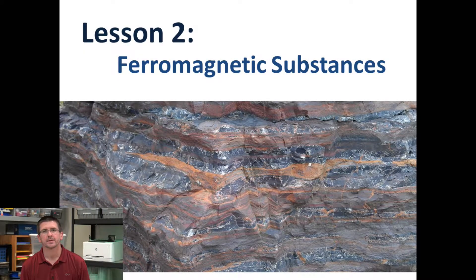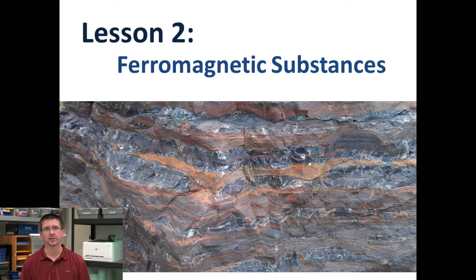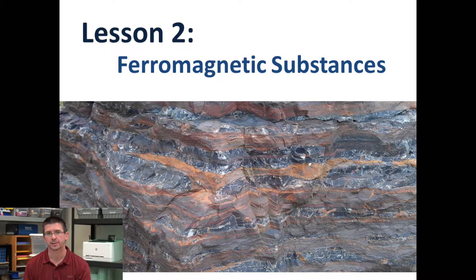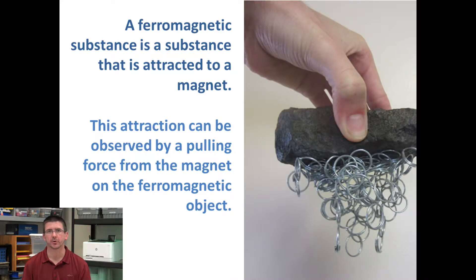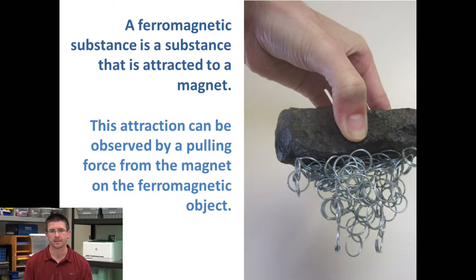In our first lesson on magnets, we talked about this idea of ferromagnetic substances as an introduction, but today we're going to go a little bit more in detail about exactly what ferromagnetic substances are and how they work. When we talk about a ferromagnetic substance, we're talking about any type of material that's attracted to a magnet — something that will stick to a magnet or a magnet will stick to it.